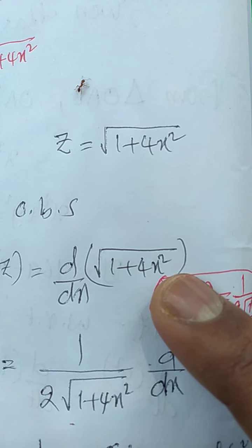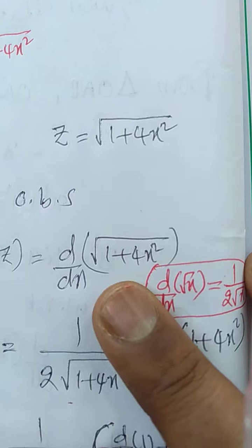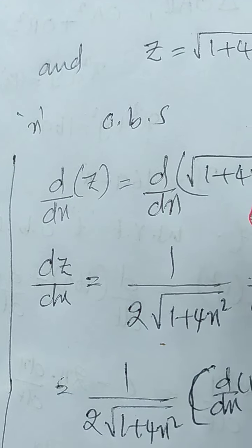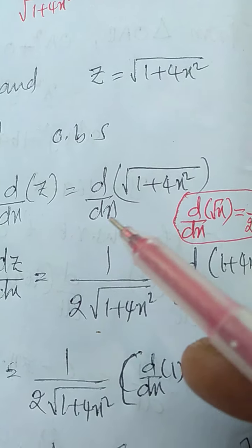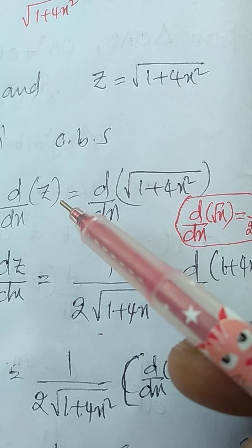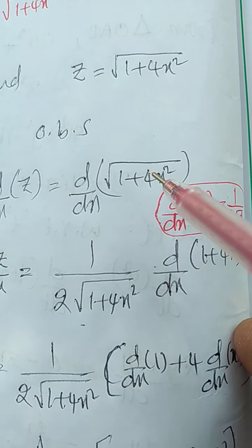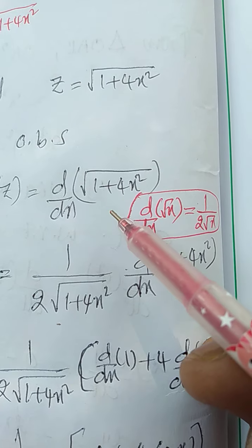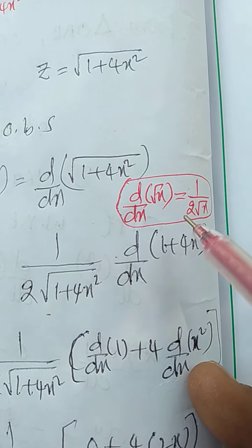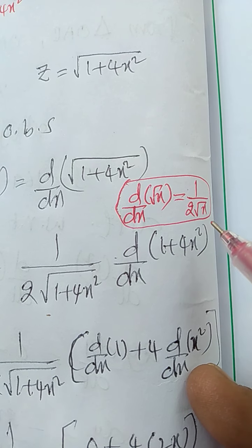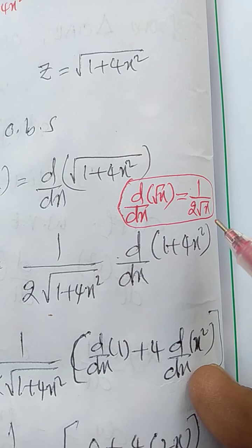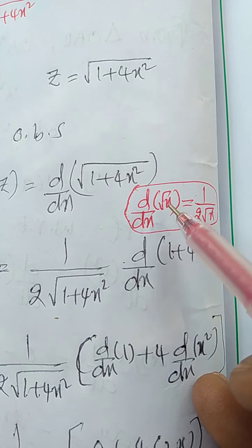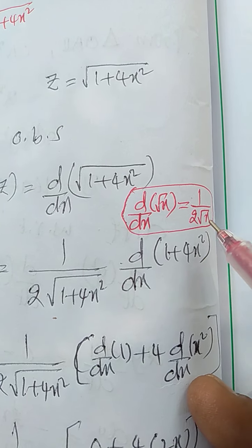Next, the second function: z = square root of 1 plus 4x². Differentiate with respect to x on both sides: d/dx of z = d/dx of square root of 1 plus 4x². It is in the form of derivative of square root of x, which equals 1/(2√x). This is the standard formula: derivative of √x = 1/(2√x).